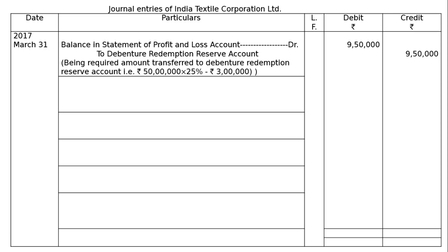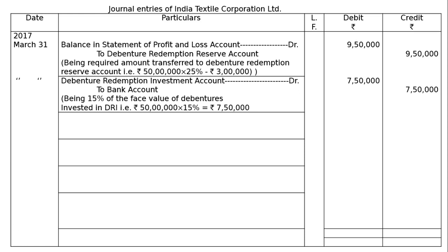The next entry is for investment on the same day, April 1, 2017. Debenture Redemption Investment account is debited to Bank — being 15% of the face value of debentures invested in DRI. That is Rs 50 lakh into 15%, which equals Rs 7 lakh 50,000. The total amount is Rs 7 lakh 50,000.